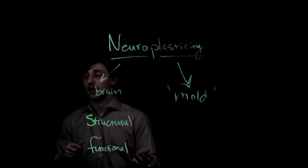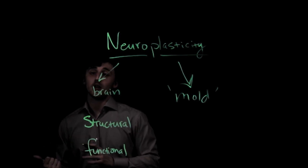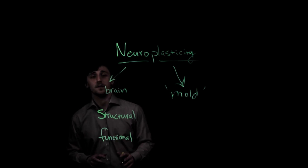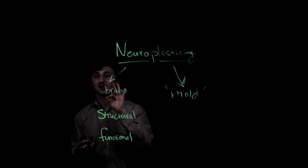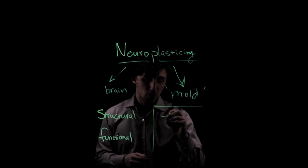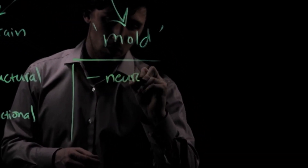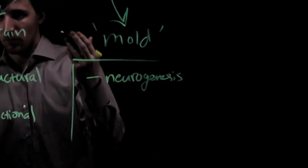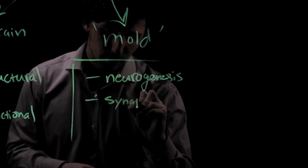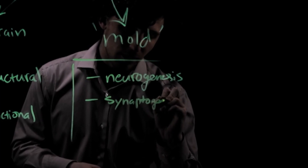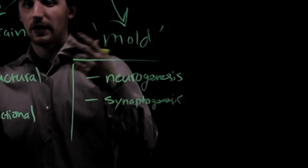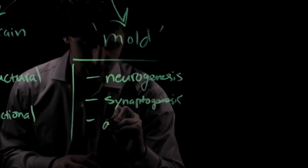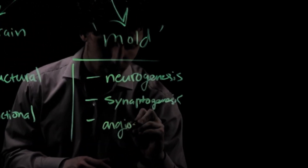Functional plasticity refers to parts of your brain picking up slack that other parts may no longer be doing, such as due to disease like dementia. There are also three mechanisms by which neuroplasticity works: neurogenesis, the development of neurons; synaptogenesis, the development of synapses or connections between neurons; and angiogenesis, the development of blood vessels.